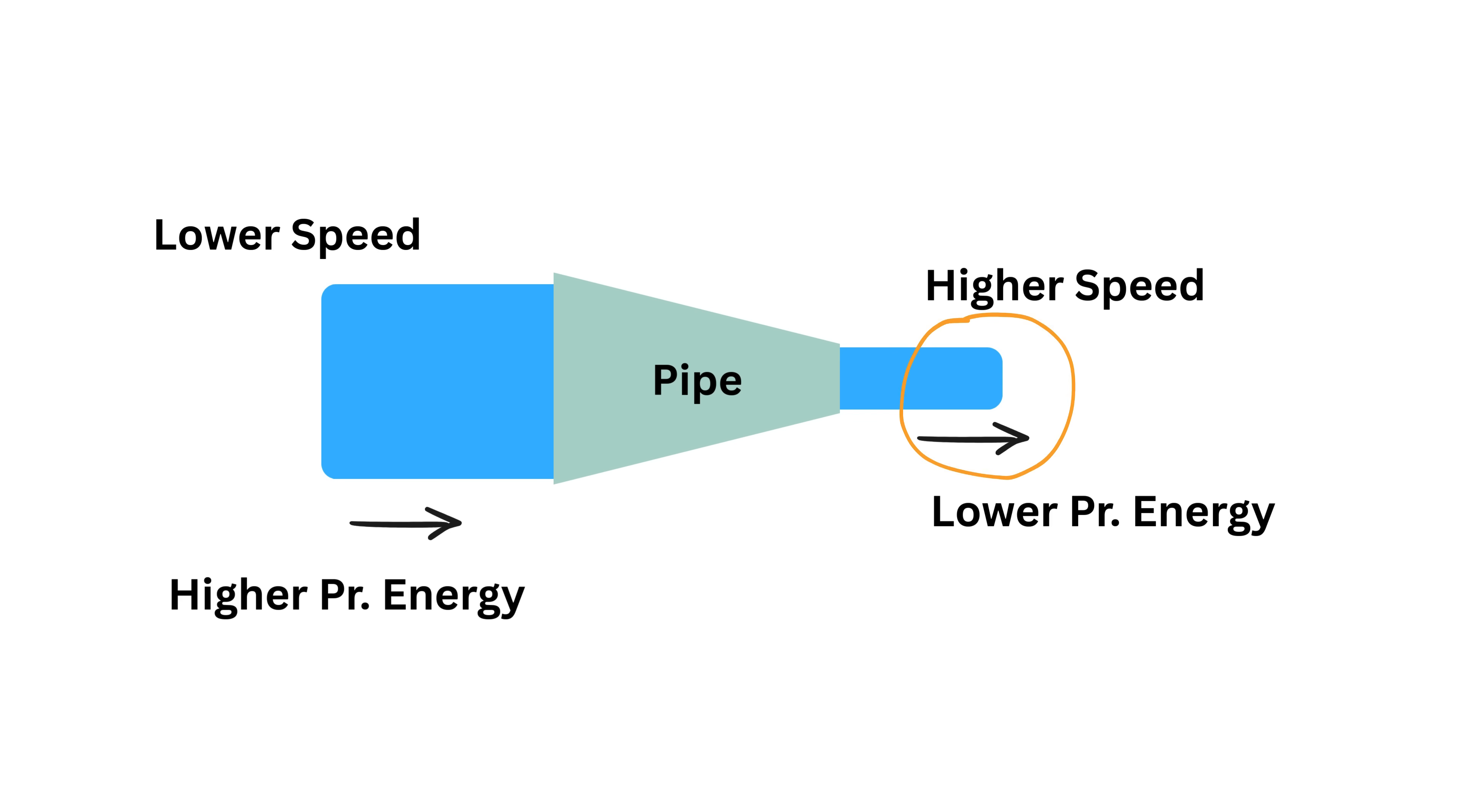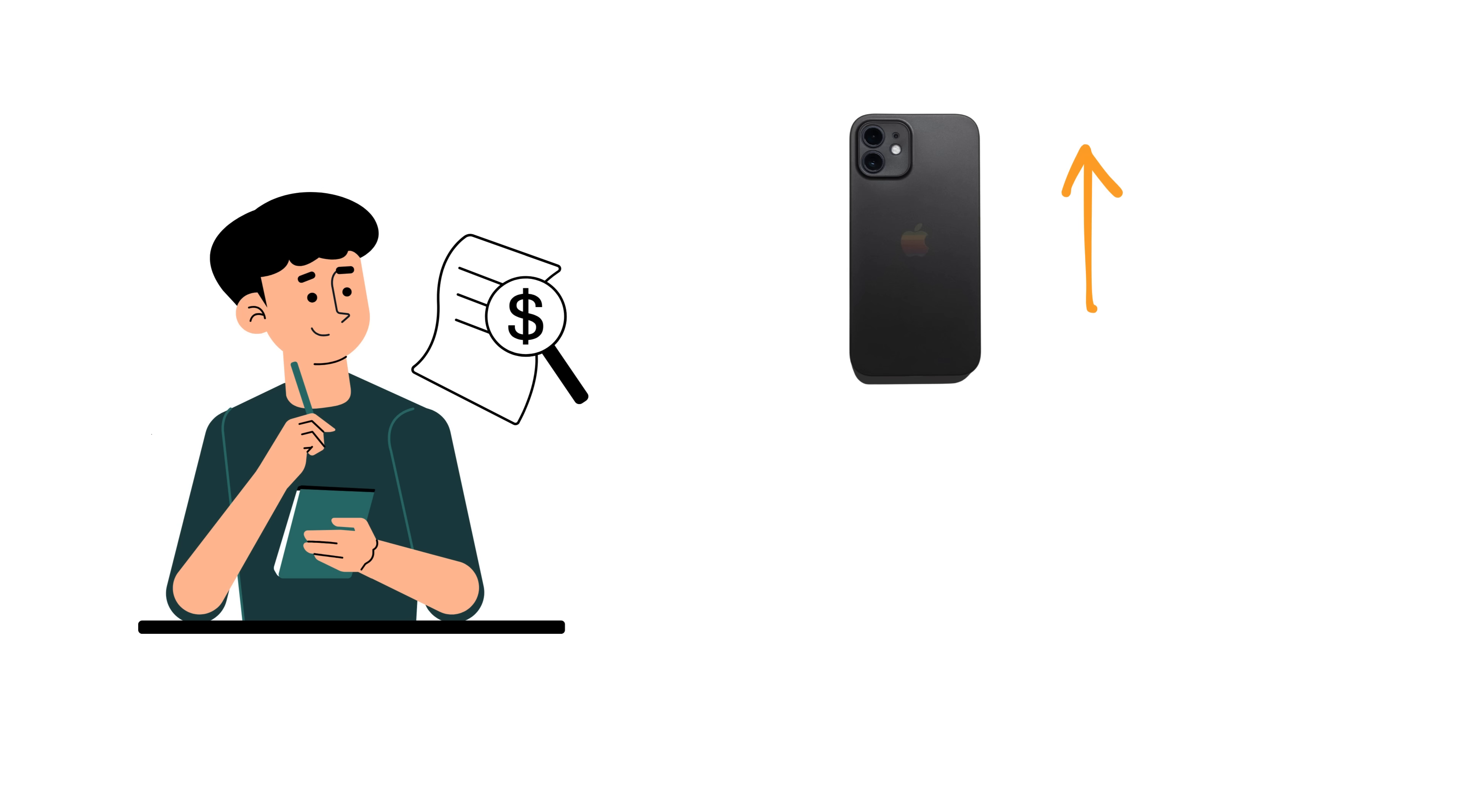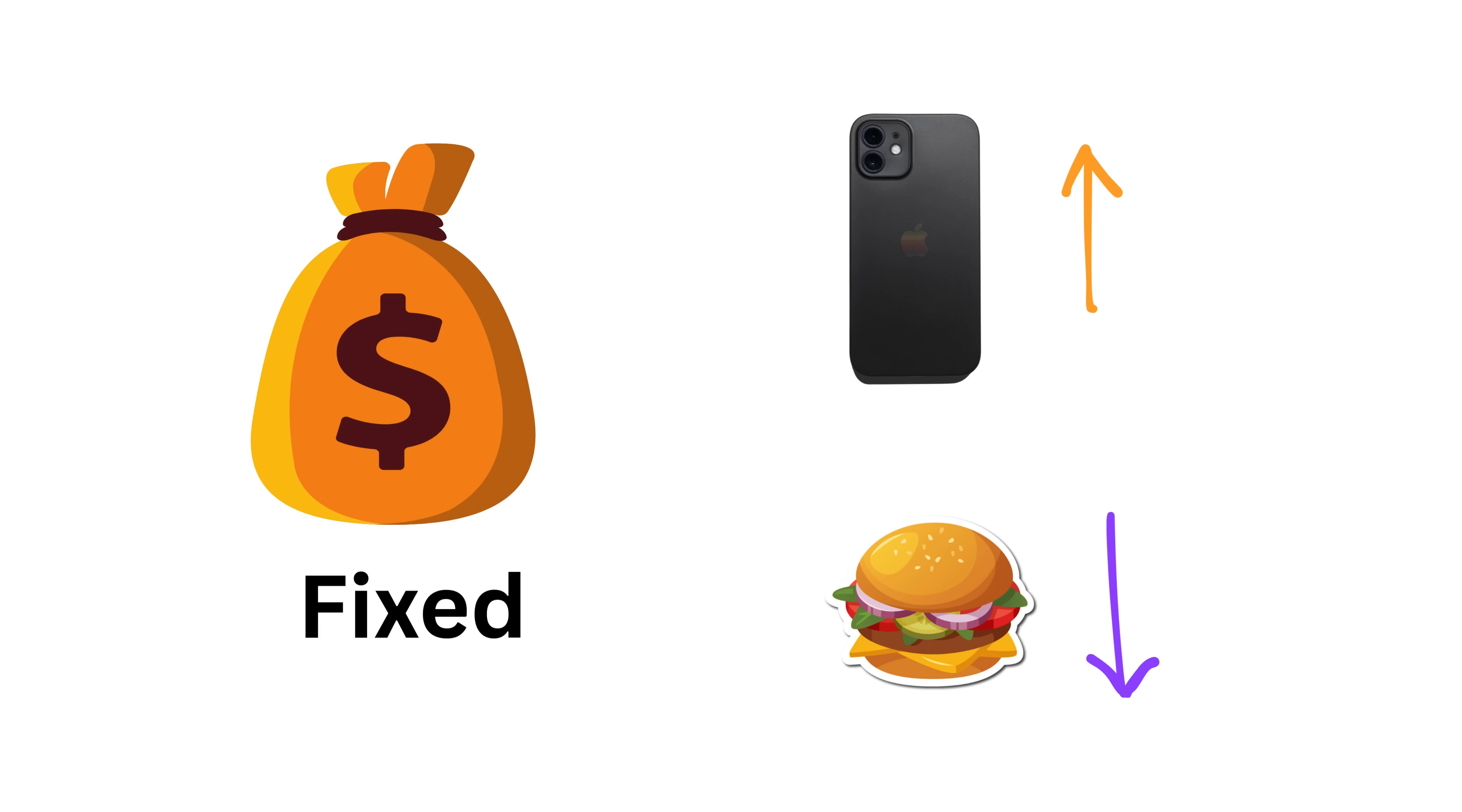So it has less pressure left inside to push on things around it. It's like a budget. If you spend more in one area, you must spend less somewhere else, but the total remains fixed.